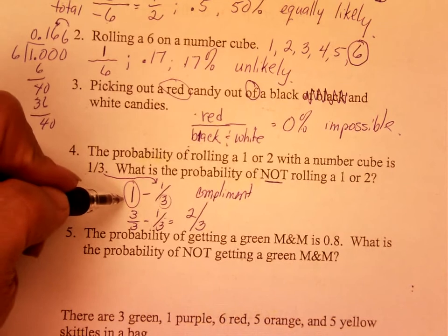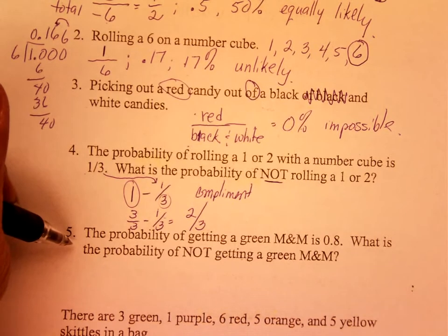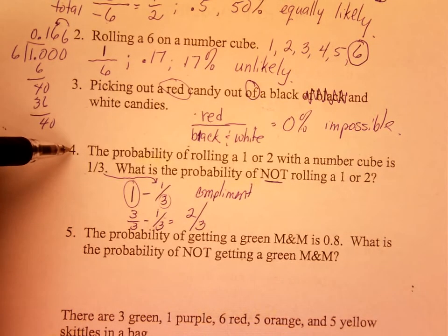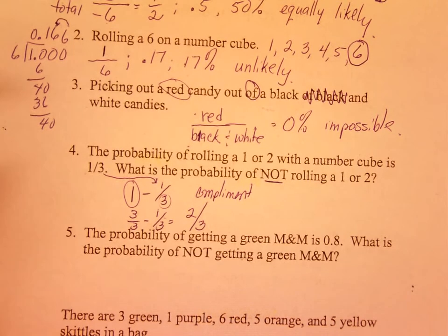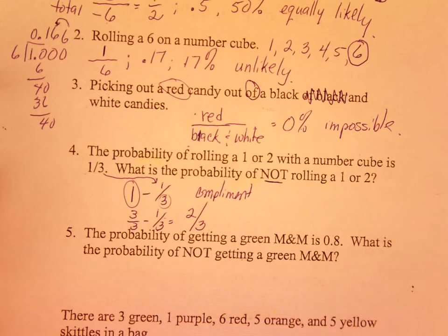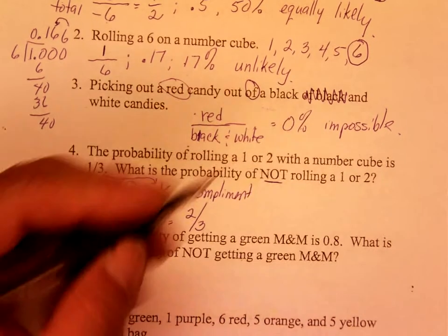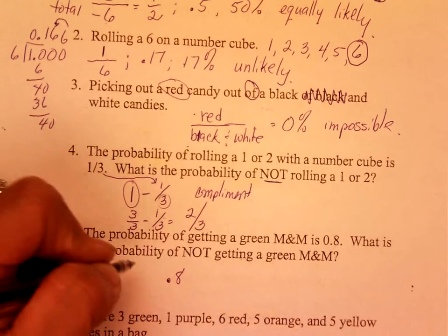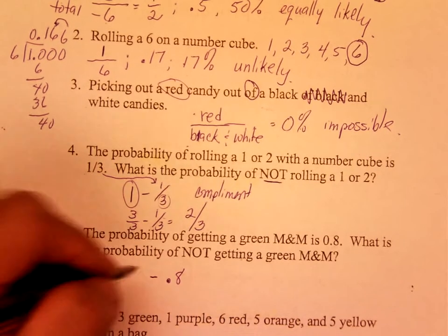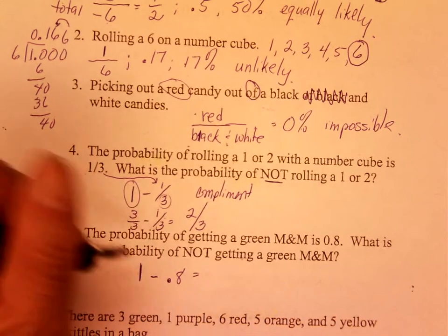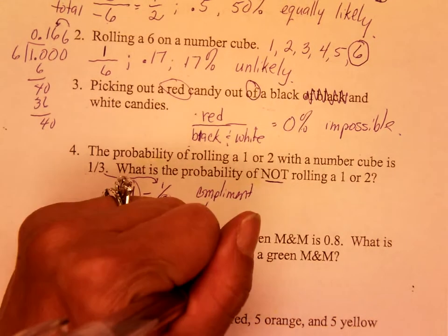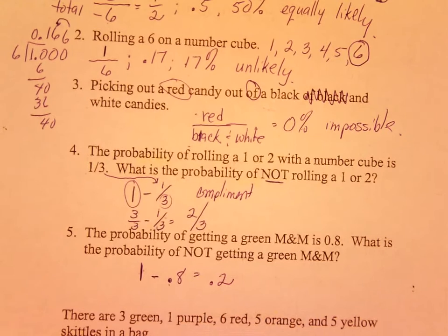Everything has to equal 1. Problem five is similar to problem four, except it uses a decimal instead of a fraction. You take 1 minus 0.8, and the answer is 0.2. That is your complement — the probability of not green is 0.2.